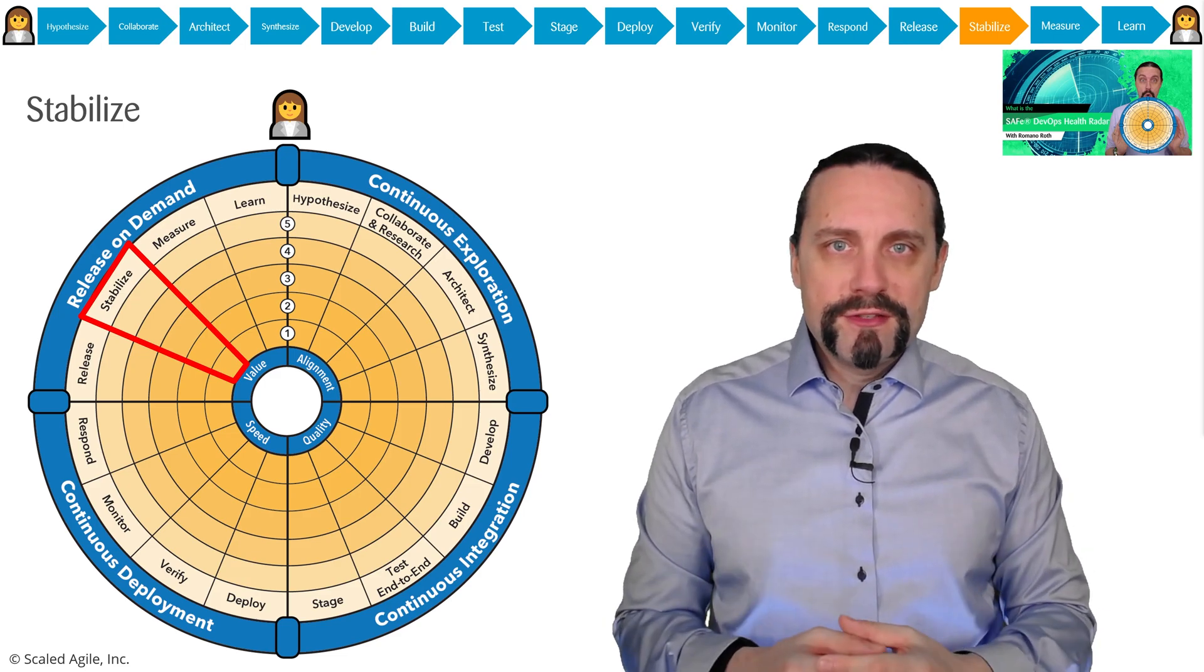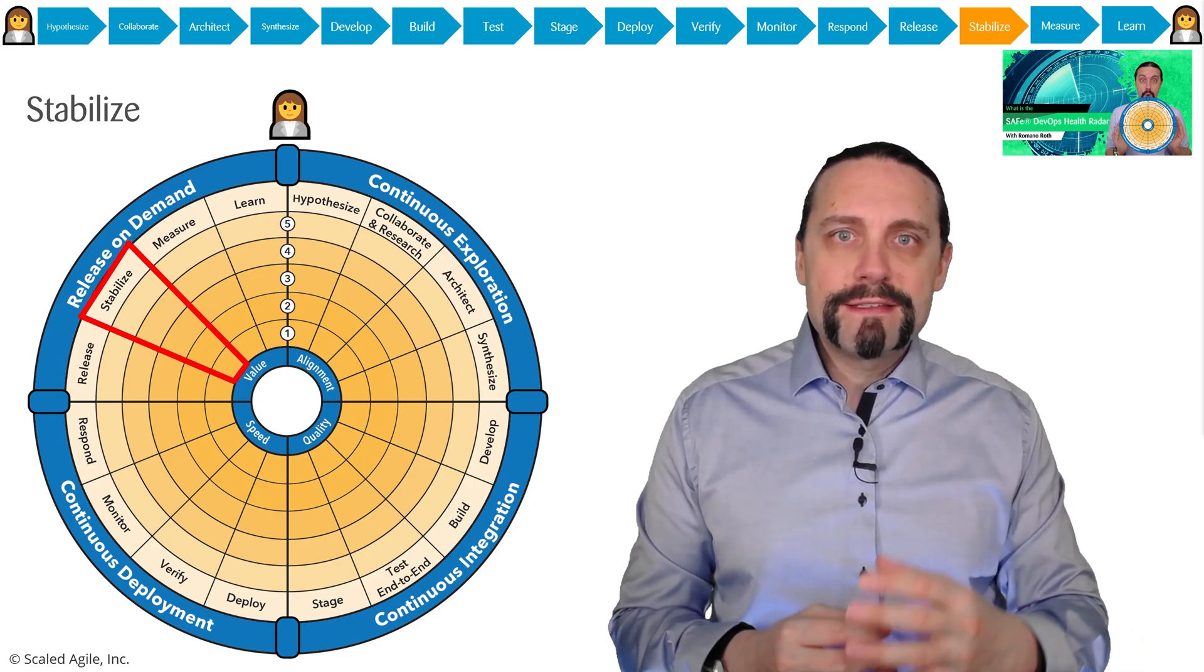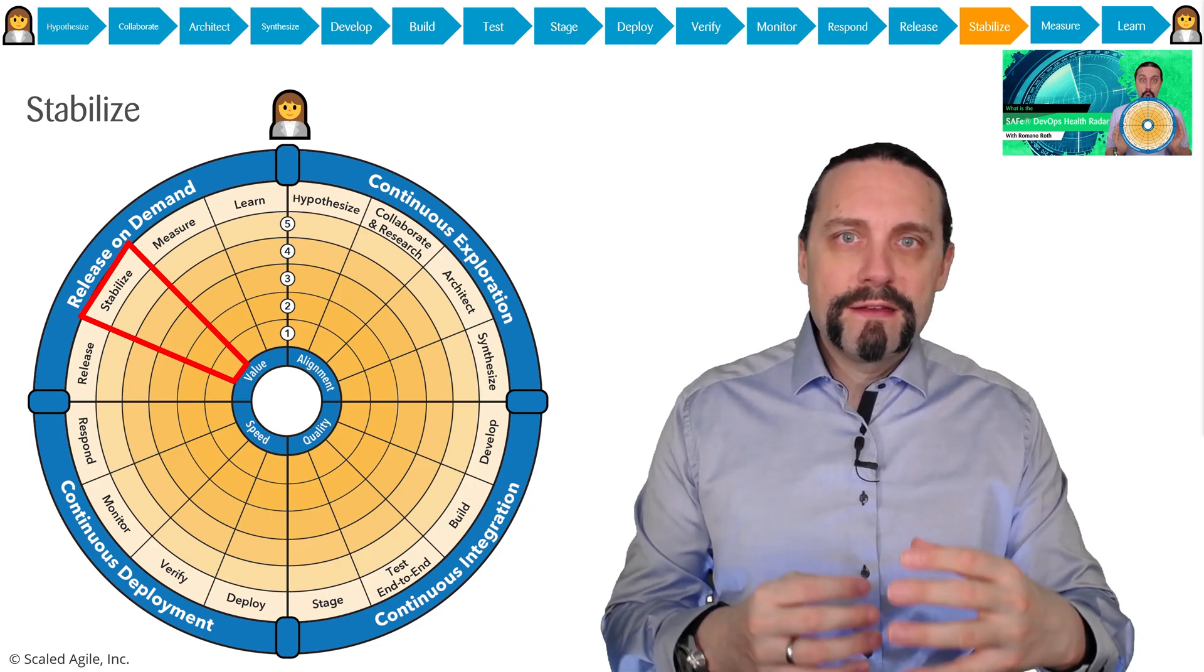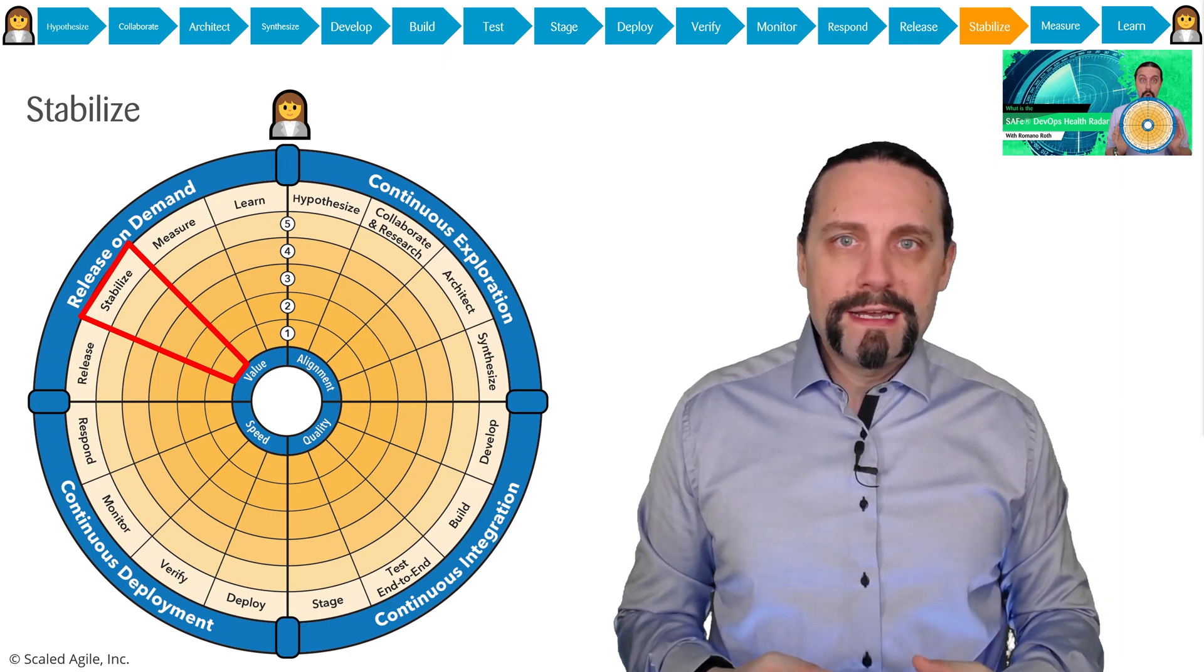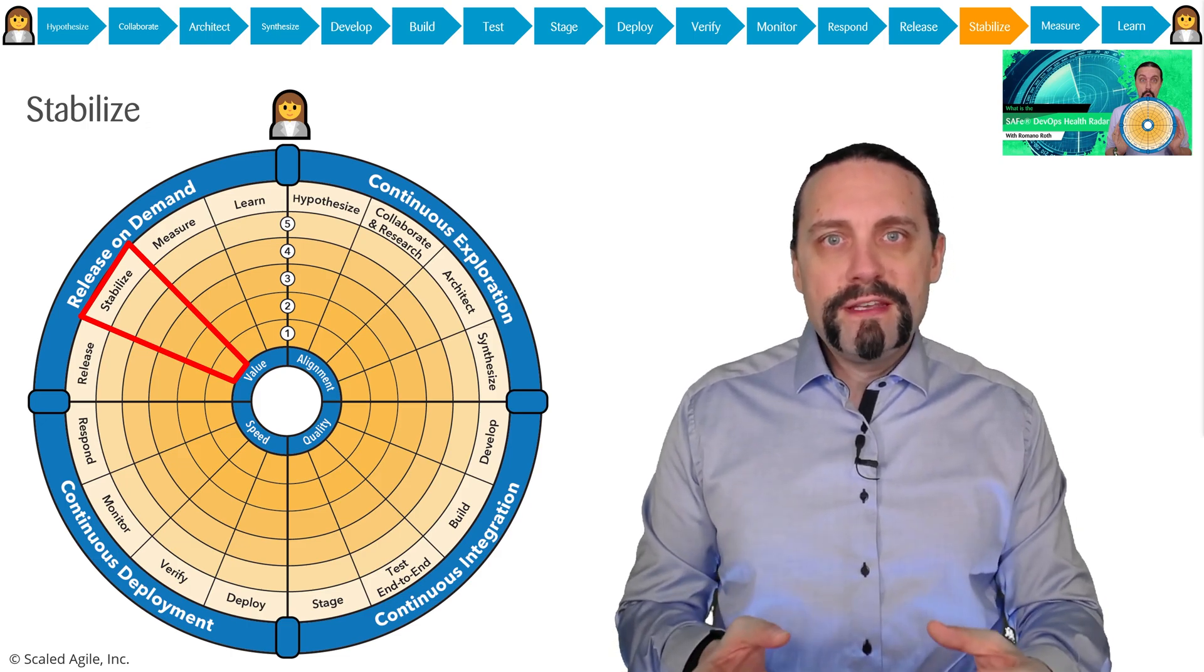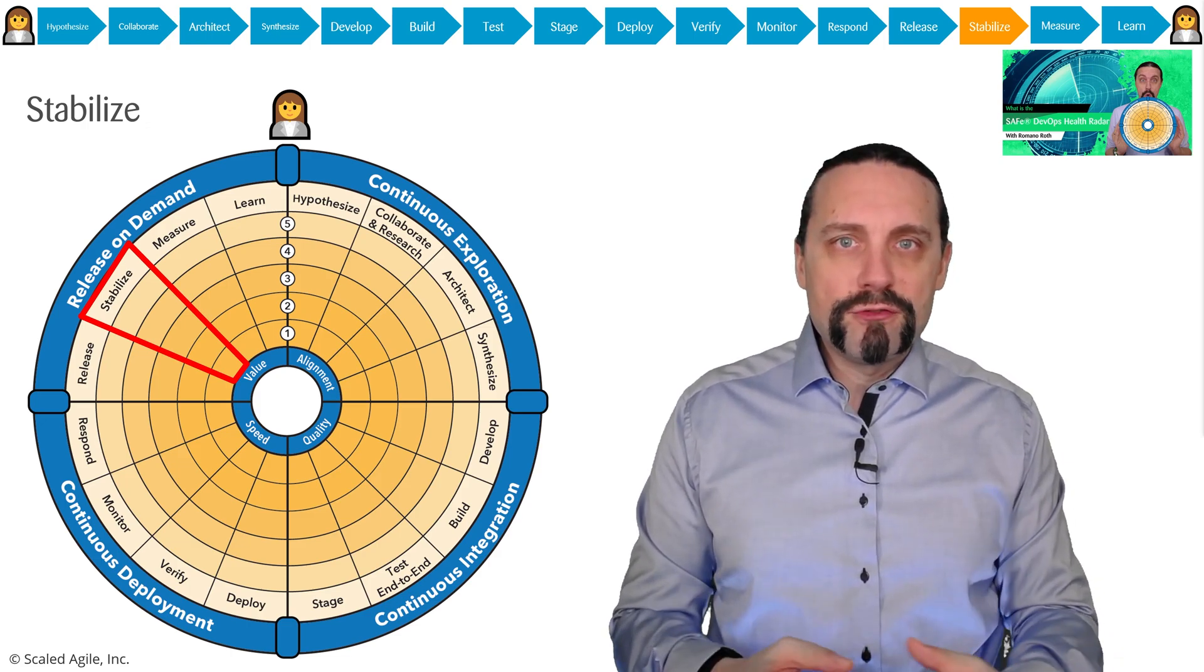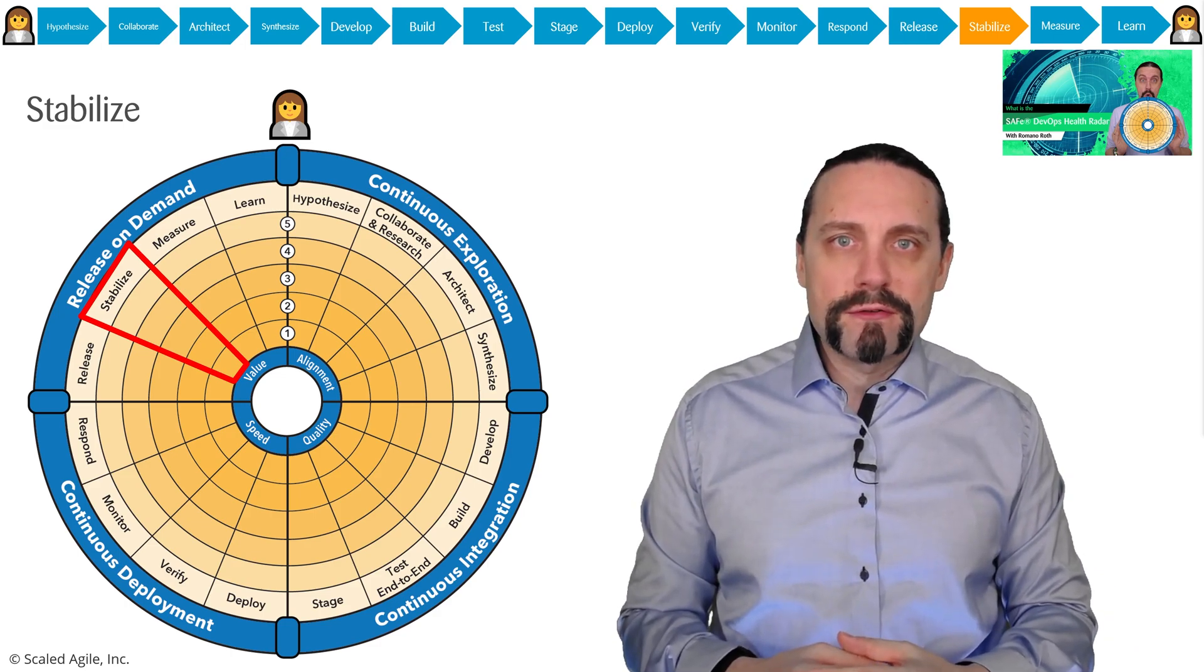In synthesize we break down the epic into features, prioritize these features, and bring them on a roadmap. After that we take the features and again break them down into user stories and start implementing these user stories.